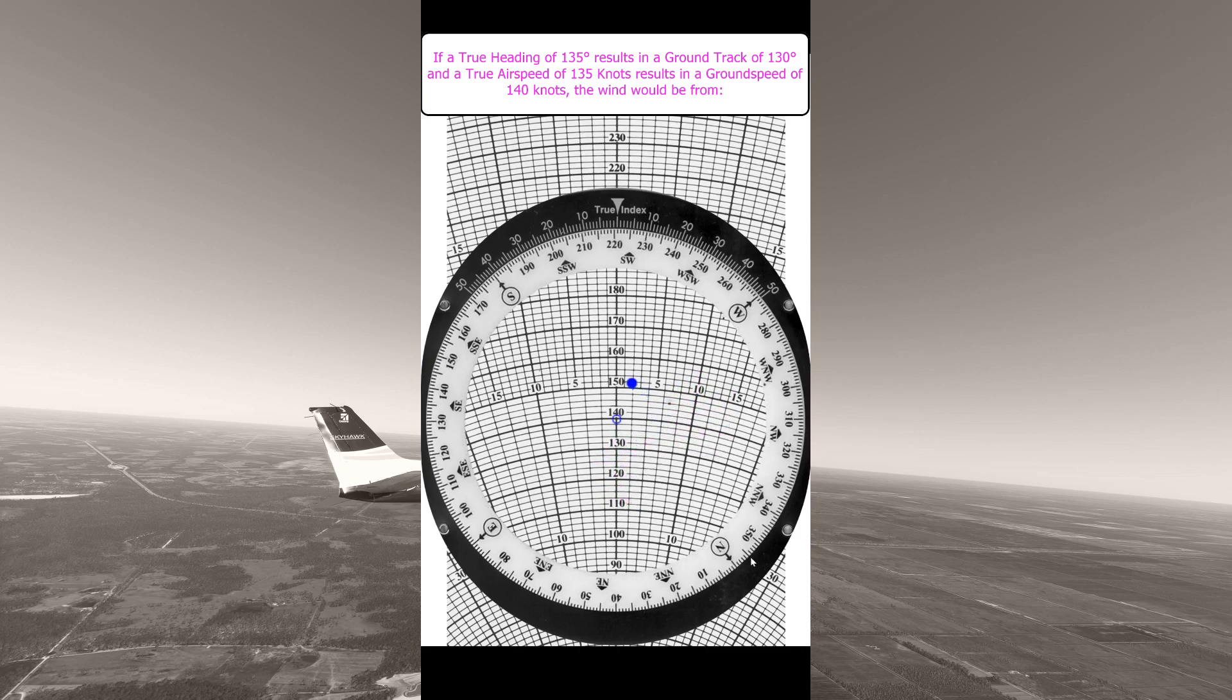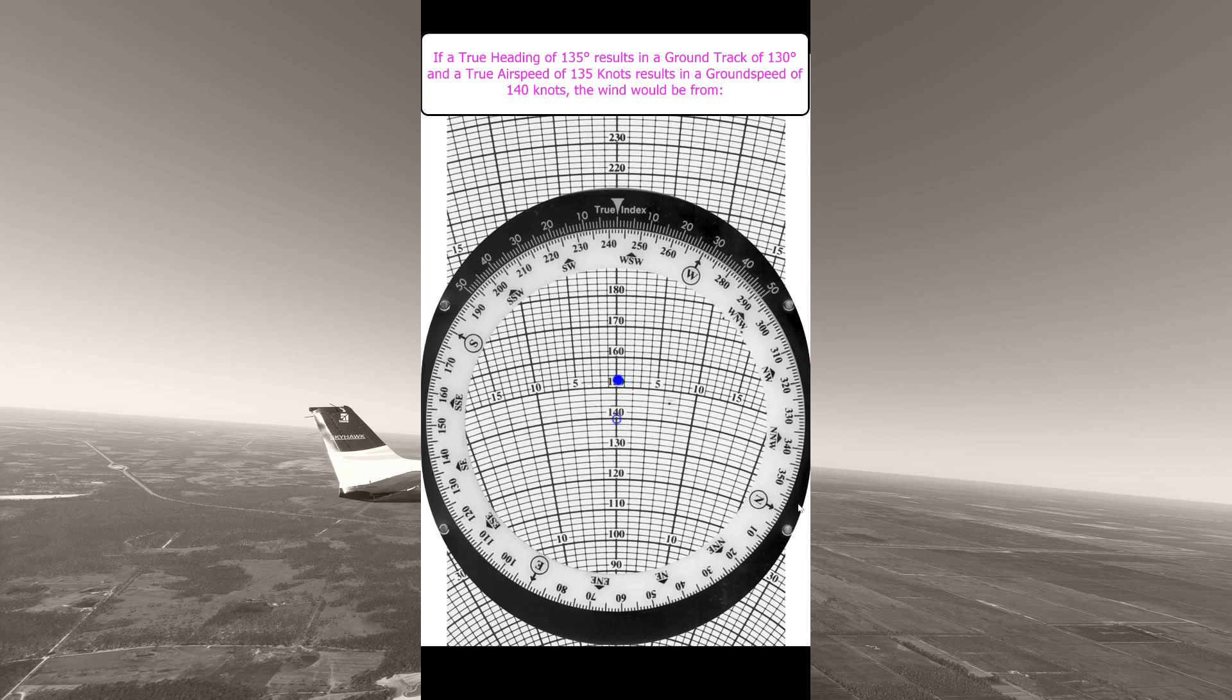With that done now spin the wheel so that the wind mark is directly above the grommet on the centre line of the sliding wind card. Now you can read the wind direction from the true index at the top.